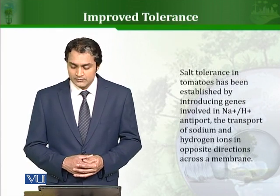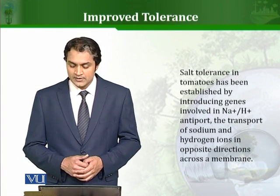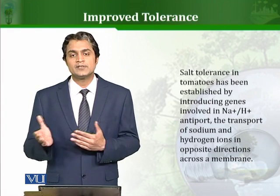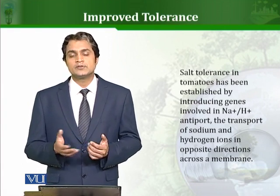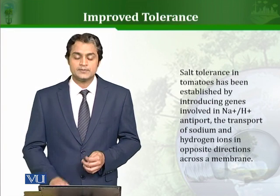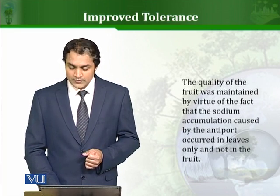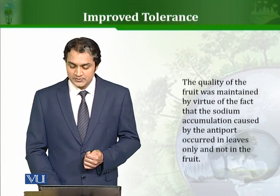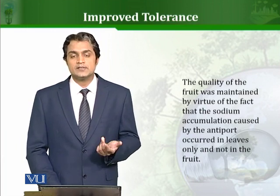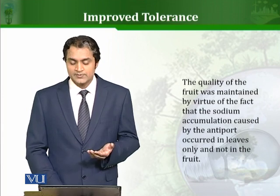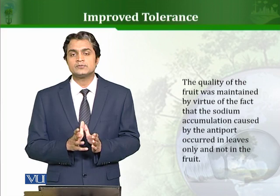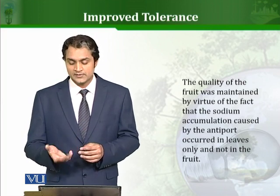Another example is salt tolerance in tomatoes, achieved by introducing genes involved in the sodium-hydrogen antiporter. The antiporter is basically the opposite of normal transport — it is the transport of sodium and hydrogen ions in opposite directions across a membrane. The quality of the fruit was maintained because the sodium accumulation caused by the antiporter occurred in the leaves only and not in the fruit. Sodium accumulated more in the leaves, but the fruit remained healthy, thus increasing the quality of the fruits.